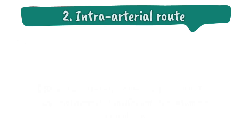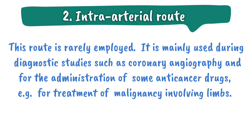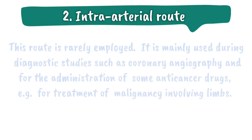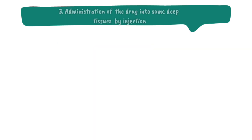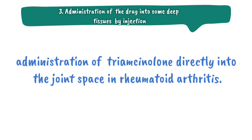The second local route is the intra-arterial route. This route is rarely employed. It is mainly used during diagnostic studies such as coronary angiography and for the administration of some anti-cancer drugs, for example for treatment of malignancy involving limbs. The third is administration of the drug into some deep tissues by injection, for example administration of triamcinolone directly into the joint space in rheumatoid arthritis.